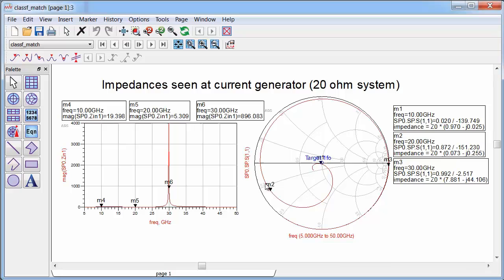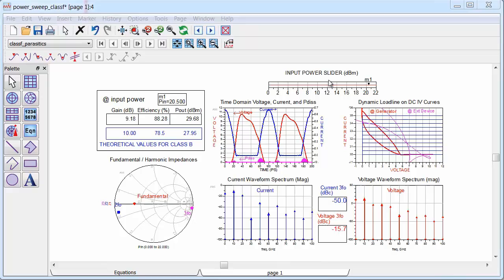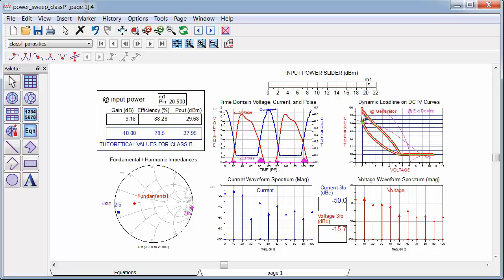So now I'll take this network and I will drop it into the Class F PA topology. And then I will re-run the simulation. So even though the load line at the external package looks distorted, that's the pink load line here, internally at the current source where it matters, the red load line, looks very much Class F. And that leads to high efficiency, even though it would not be obvious that it is going to be a high efficiency amplifier by looking at the extrinsic node of the device.